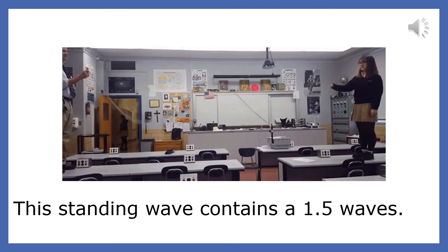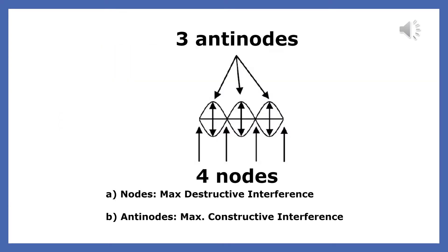This standing wave contains three antinodes and four nodes. Be careful that you don't forget to count the nodes at the end of the standing wave. Because the standing wave has a node at each end, we say that it is closed at each end. If it had an antinode at the end, we would say that it was open at that end. In this presentation, we will focus on standing waves that are closed at both ends.